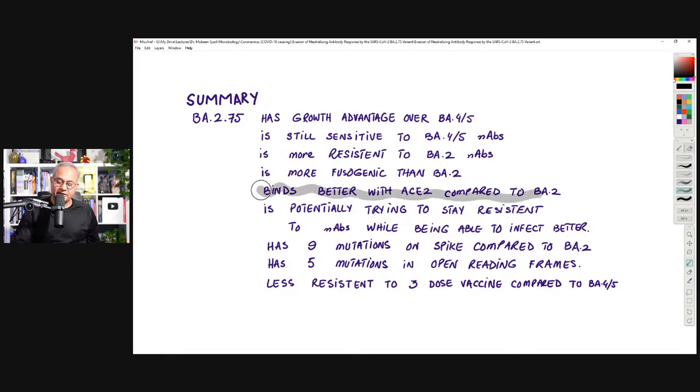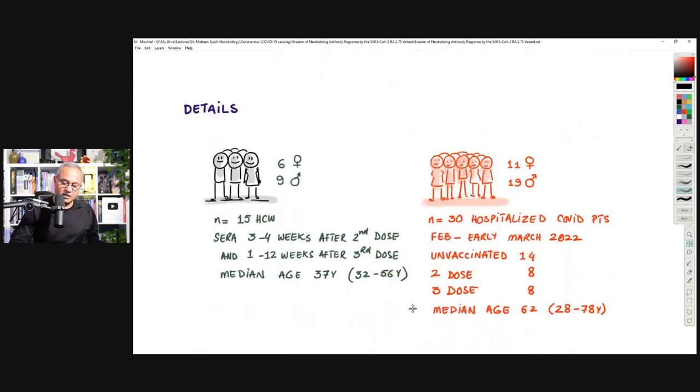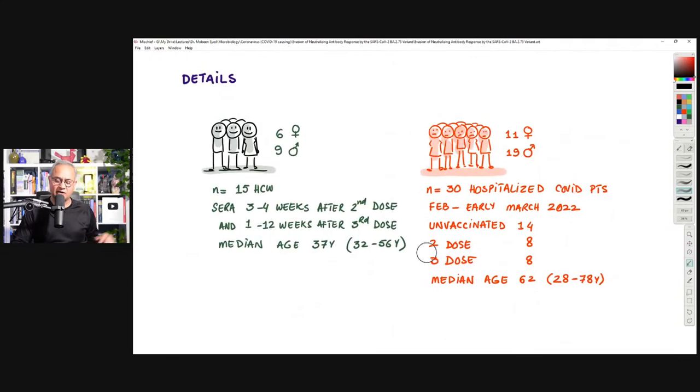Now, it can bind better with ACE2, but it also has lost some salt bridges as well. So it has created a new hydrogen bridge or a bond, but it has also lost some salt bridges to bond. Now, some more details just for the housekeeping, otherwise we are done for the day. The study included, it's a small study, and they kind of say that in their limitations as well, that the sample sizes are small.